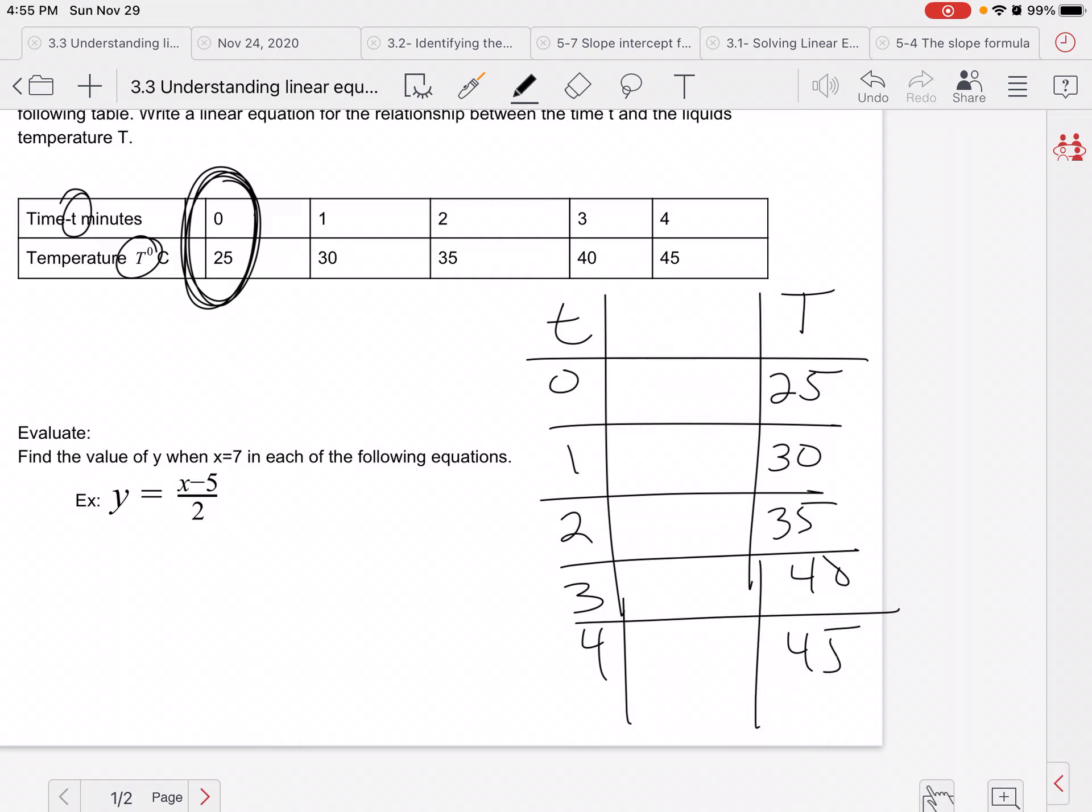Now if I look here, I might be like, well, to get from zero to 25, I have to add 25. But if I add 25 to one, I'm not going to get 30. So plus 25 doesn't work. But remember how I said the zero to 25 really makes a difference. So if I think about this, well, zero plus 25 gives me 25. So 25 plus what gives me 30? Well, five does.